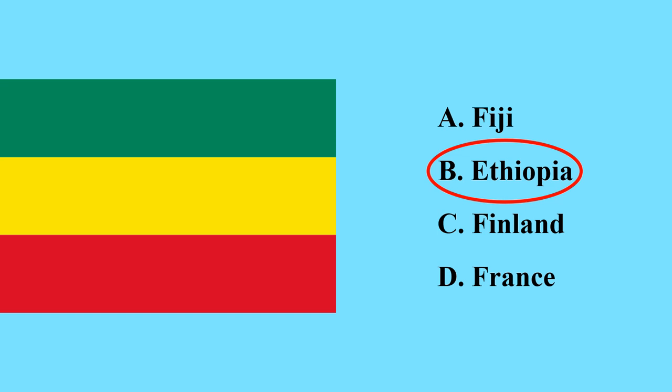There are three colors in the flag: the green color represents the natural beauty of Ethiopia, the yellow color represents the hopes of the people of Ethiopia, and the red color represents the sacrifice of Ethiopian patriots who defended their country against European colonists and other enemies. This is the flag of Ethiopia.